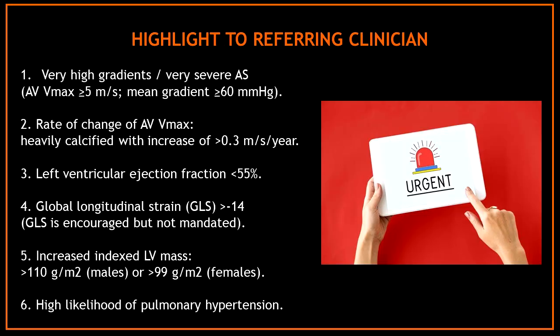Sometimes we don't know when to escalate the patient's findings. I'm going to give you six situations where you should highlight findings to the referring clinician. Number one: if you find very high gradients or very severe aortic stenosis — for example, an aortic valve V-max more than 5 m/s or a mean gradient more than 60 mmHg. Number two: if you observe a rate of change of aortic valve V-max — for example, a heavily calcified aorta with an increase of more than 0.3 meters per second per year.